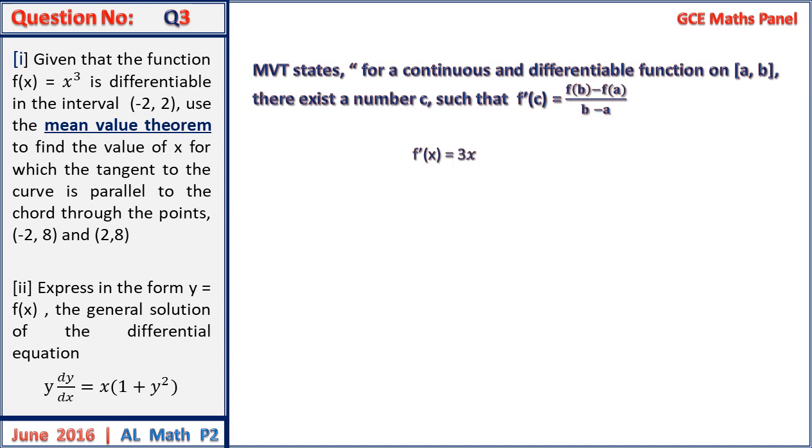Let us apply it in this equation. f prime of x would be equal to 3x squared and f of b minus f of a on b minus a would be equal to f of 2 minus f of minus 2 all on 2 minus minus 2 giving us a value of 4. Therefore, 3x squared is equal to 4 and x would be equal to positive negative 2 on root 3.